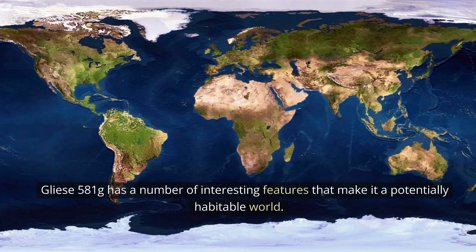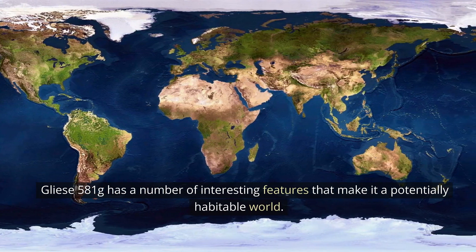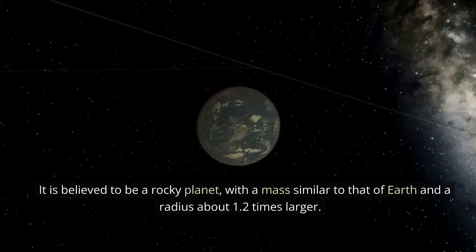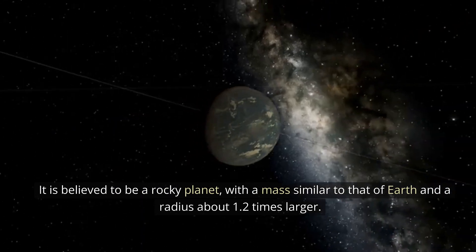Gliese 581g has a number of interesting features that make it a potentially habitable world. It is believed to be a rocky planet, with a mass similar to that of Earth and a radius about 1.2 times larger.